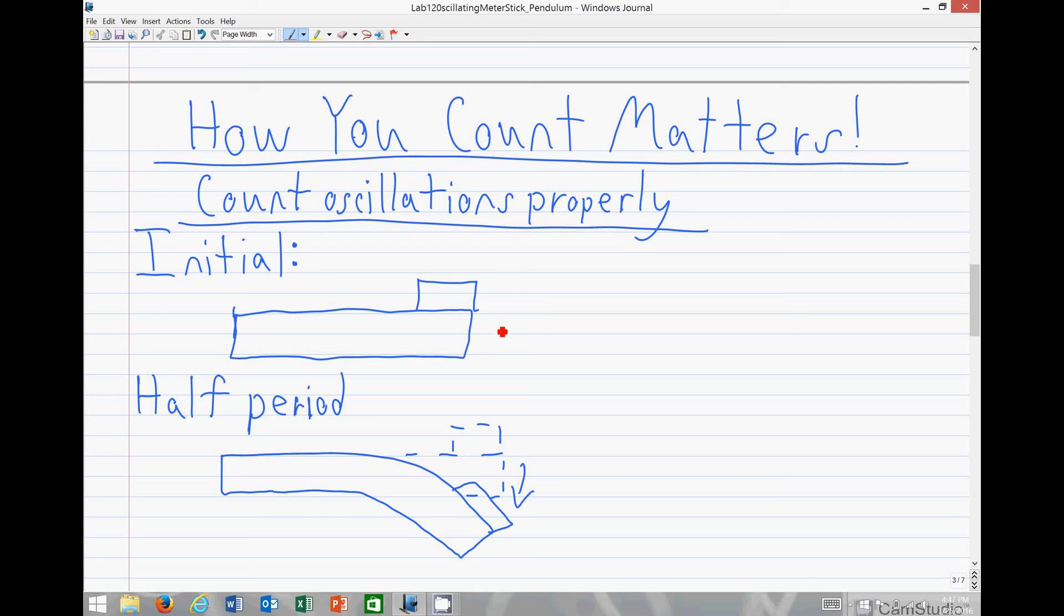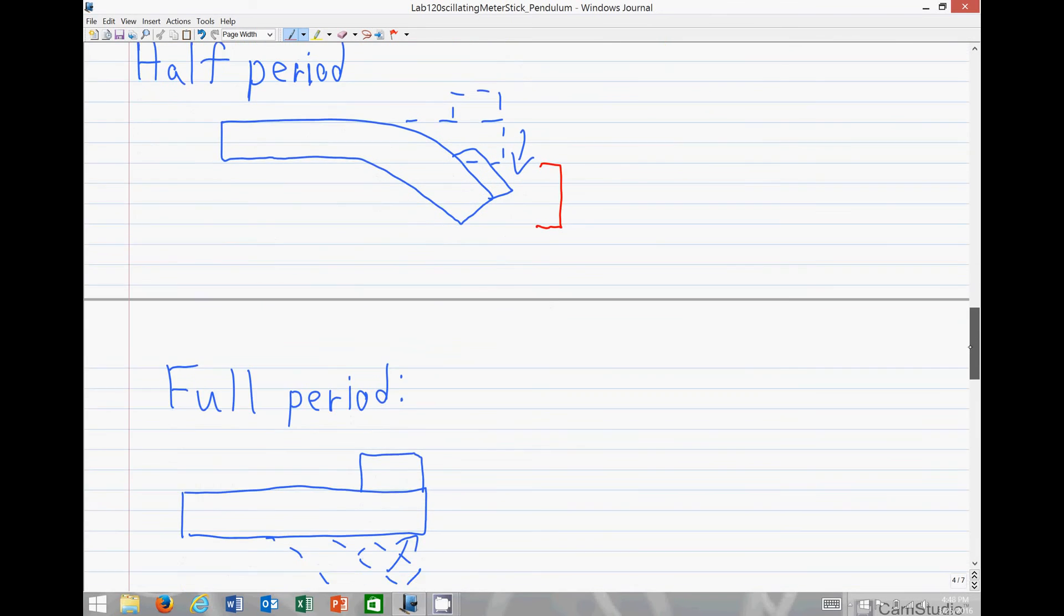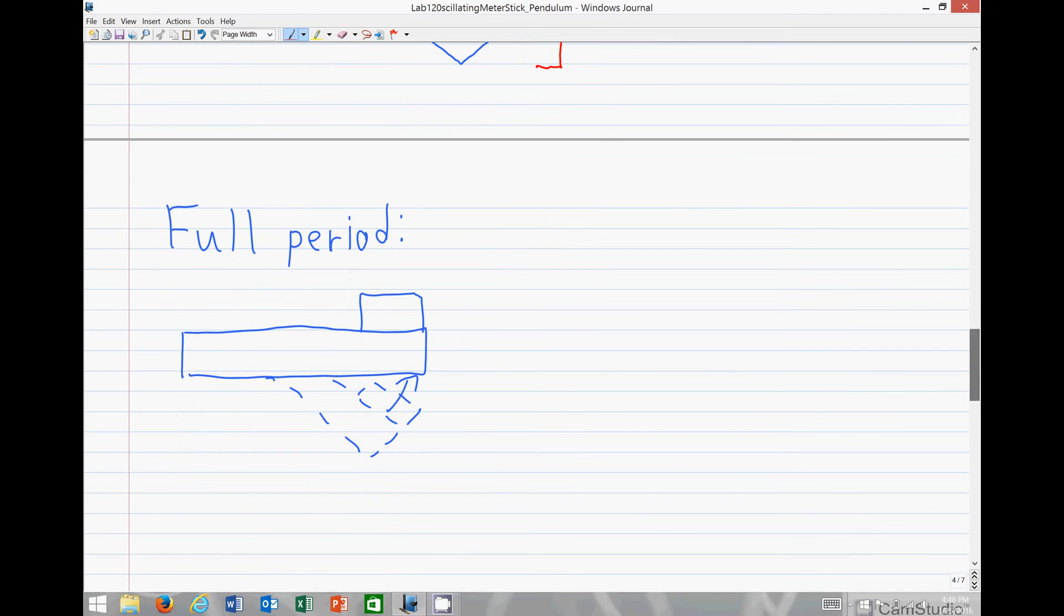So, if a given oscillation starts counting at zero in this state, a half period is when it moves all the way across the equilibrium position to an opposite point, and then back to its original point is a full period.